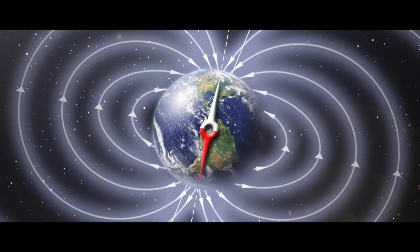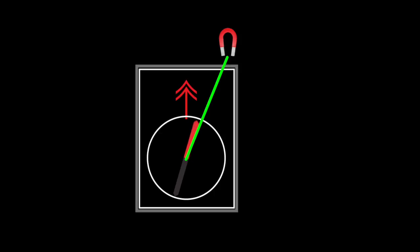The magnetic needle in your compass aligns with the Earth's magnetic field, so it points to the magnetic north pole or magnetic north.